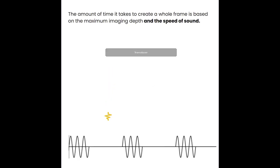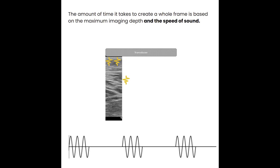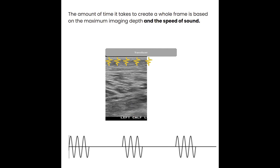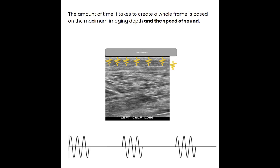In Unit 4, we talked about how the machine sends a pulse out and then waits for that pulse to travel all the way to the max depth and return before it sends another pulse. That one pulse creates one scan line, and the next pulse creates the next scan line, and so on, until a whole image is created. The amount of time it takes to create a whole image frame is based on the maximum imaging depth and the speed of sound.